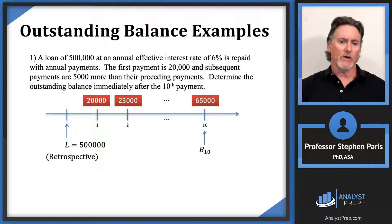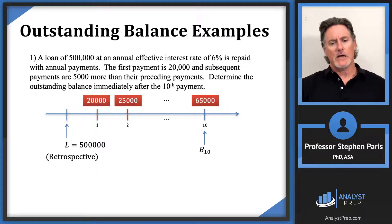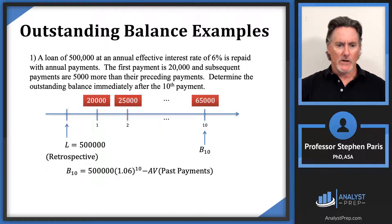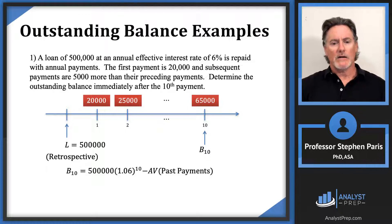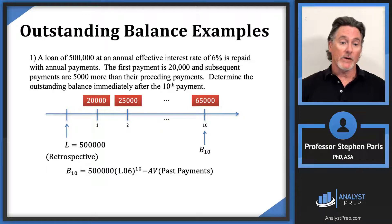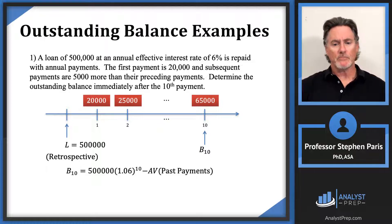Retrospectively, the balance at time t is the accumulated value of the loan minus the accumulated value of the past payments. Accumulate $500,000 from time 0 to time 10 by multiplying by 1.06 to the 10th power, then subtract the accumulated value of the past payments — those being $20,000 at time 1, $25,000 at time 2, and so forth. This reduces to calculating the accumulated value of a 10-year arithmetically increasing annuity.